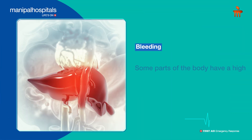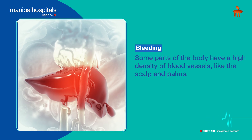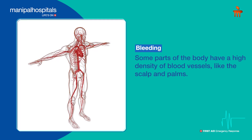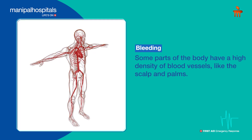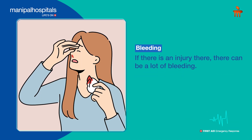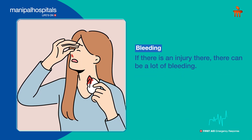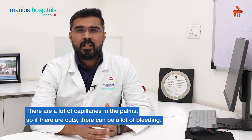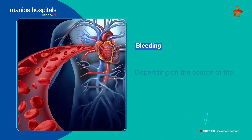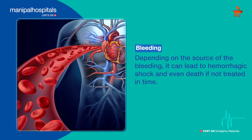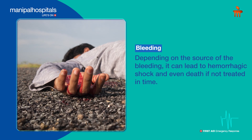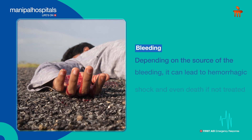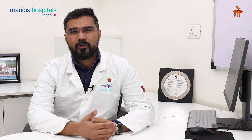In some parts of the body, we have a high density of blood vessels. For example, on the scalp there is a very high density of blood vessels, so if there is an injury to the scalp there will be a lot of bleeding. Similarly, there are a lot of capillaries in the palms, so a cut there can also cause significant bleeding. Depending on the source, bleeding can be really dangerous — whether internal or external — and can lead to hemorrhagic shock and eventual death.